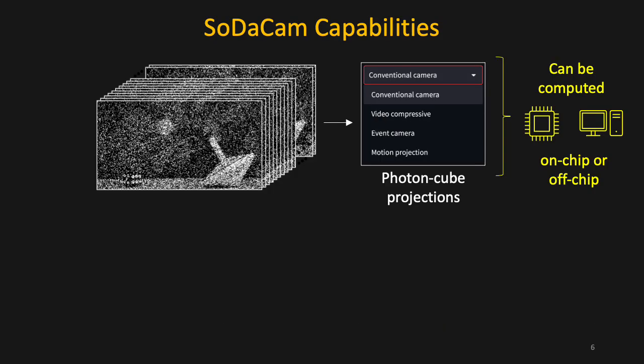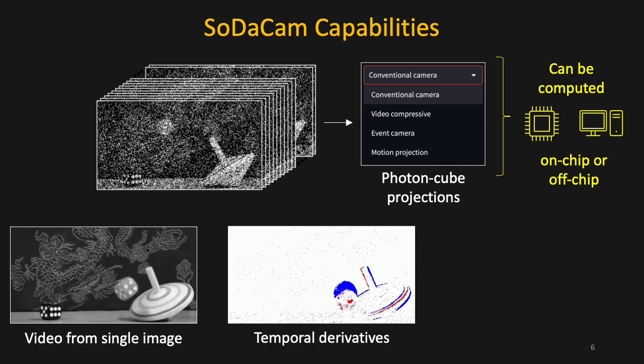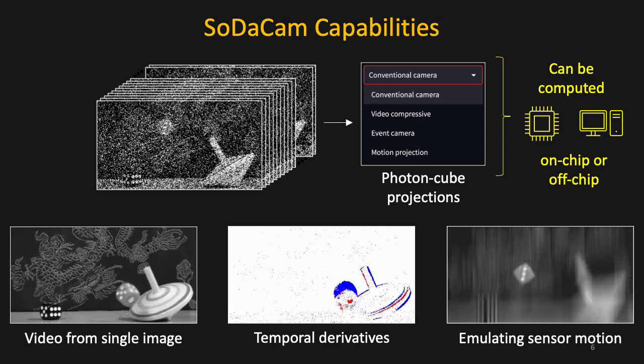Here are a few capabilities of our photon cube projections. We can recover a video from a single image. We can capture changes in scene content, just like an event camera. We can even emulate sensor motion without physical movement. This allows us to freeze the falling die in air by emulating its trajectory as it falls.